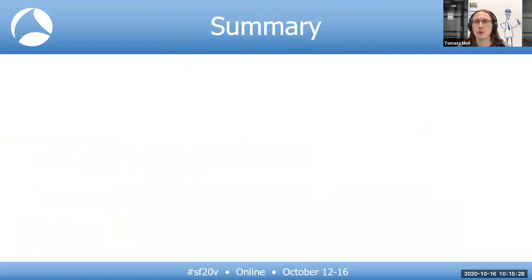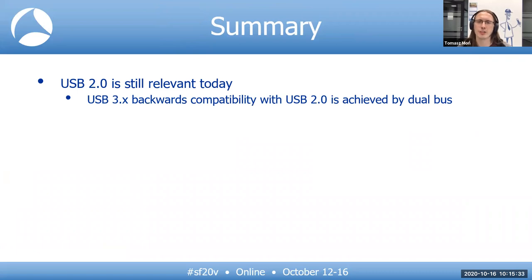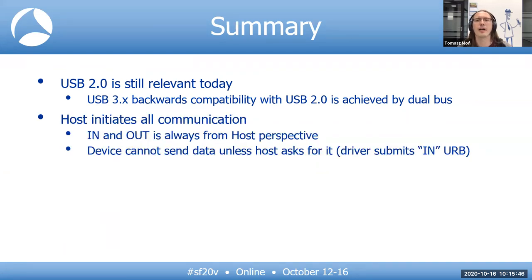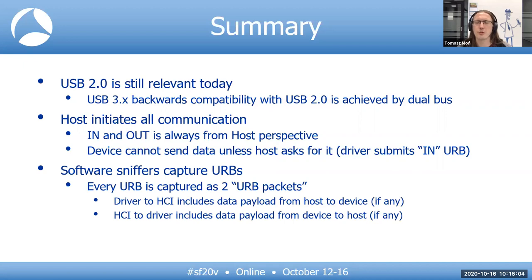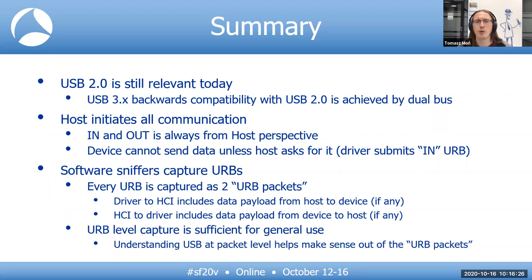To summarize: USB 2.0 is still relevant today, not only because there are many applications where USB 2.0 speeds are sufficient, but also because USB 3.0 backwards compatibility with USB 2.0 is achieved by dual bus. The host initiates all communication — IN and OUT is always from the host's perspective, and the device cannot send data unless the host asks for it. Software sniffers capture URBs; every URB is captured as two URB packets. The driver-to-host-controller packet includes data payload from host to device (if any), and the host-controller-to-driver packet includes data payload from device to host (if any). URB-level capture is sufficient for general use, but understanding USB at the packet level helps make sense of the URB packets.